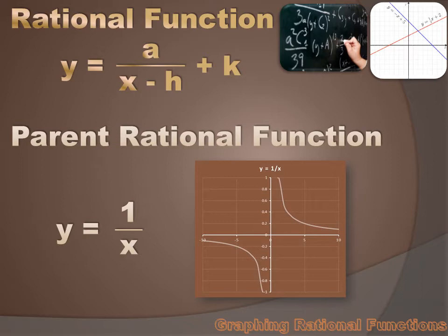You'll see there are some similarities and differences between the parent and the generic rational function. In the parent rational function, the coefficient of x is one. But it doesn't have to be — it could be two, three, five, or negative six. And if it's anything other than one, it would impact the graph of the parent rational function.